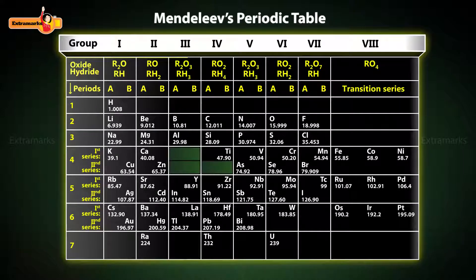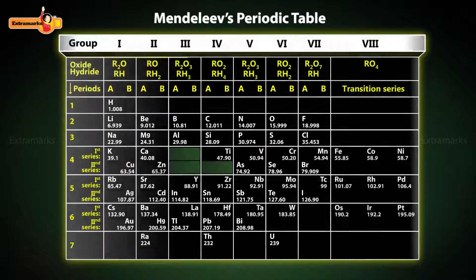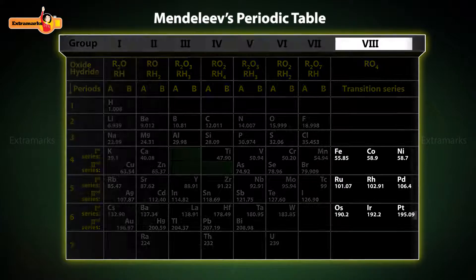The elements placed on the left-hand side of each group constitute subgroup A, while the elements on the right-hand side of each group constitute subgroup B. Group 8 has 9 transition elements in 3 sets of 3 elements.